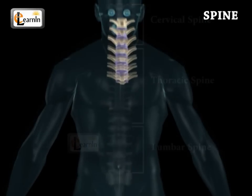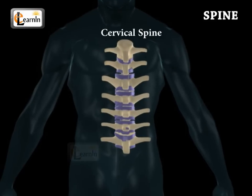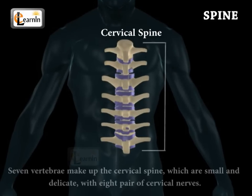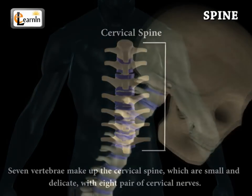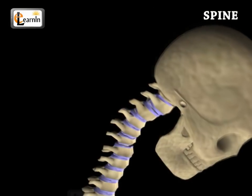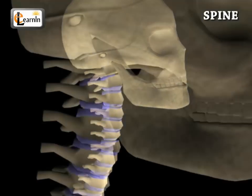The cervical spine begins with the base of the skull. Seven vertebrae make up the cervical spine, which are small and delicate, with eight pairs of cervical nerves. It is these vertebrae that help in the movement of the head and the neck.